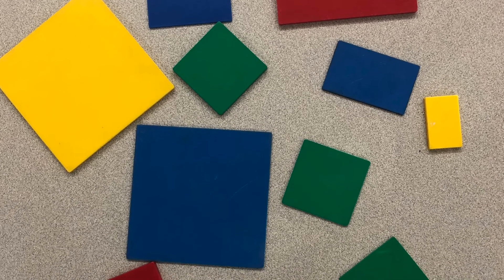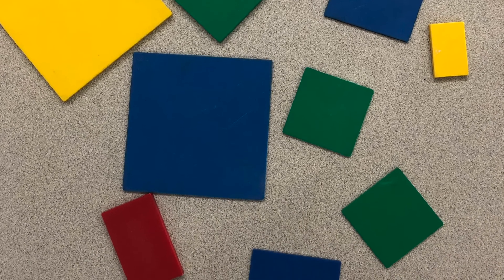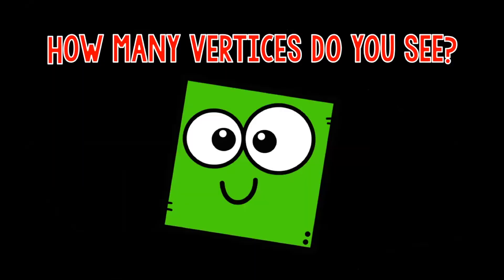How many sides do you see on my shapes? What about vertices? How many vertices or corners do you see? One, two, three, four.